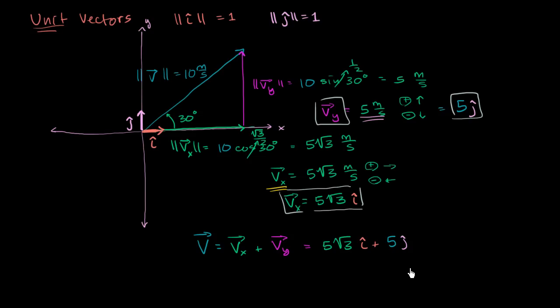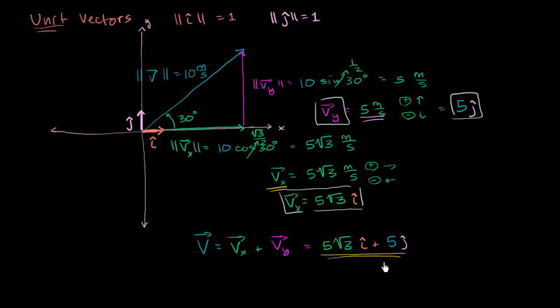If you want to go into three dimensions, which you often will as physics moves on through the year, you can introduce a unit vector k̂ that goes into that third dimension. The standard convention is that k̂ is the up-and-down dimension. This is already pretty neat because we can now represent any vector through its components, and it's also going to make the math much easier.